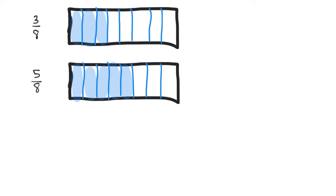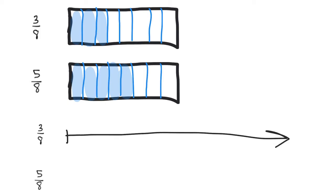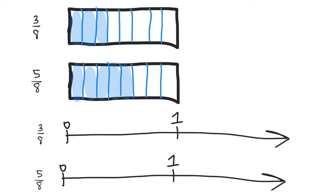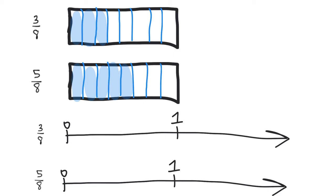Now if I wanted to, I could use a number line. I'm going to draw the number line down here — there's our 0 and there's our 1. Since we're going to need two of them, let me duplicate that and move it down. Now I have two identical number lines. To represent 3/8, I'm going to cut from 0 to 1 into 8 equal-sized pieces, and 3/8 means move over 3 pieces: 1, 2, 3.